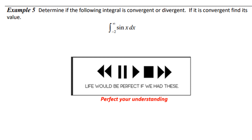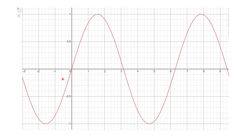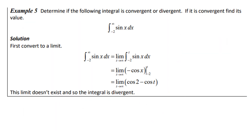Determine if the integral from -2 to ∞ of sin(x) dx converges or diverges. We write this as the limit as t → ∞ of the integral from -2 to t of sin(x) dx. The antiderivative is -cos(x), so we get -cos(t) + cos(-2) evaluated at t. As t → ∞, cos(t) oscillates between -1 and 1 and never settles to a fixed value, so the limit does not exist. Therefore, the integral is divergent. We will continue this discussion in lecture 41.2.